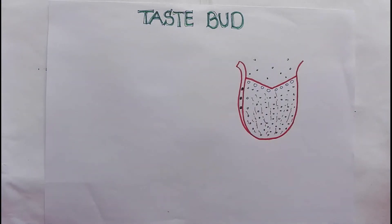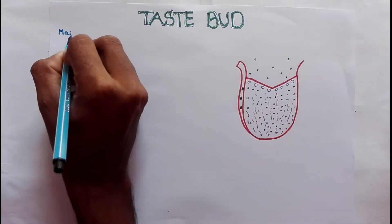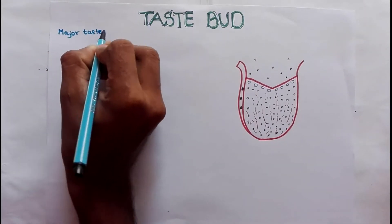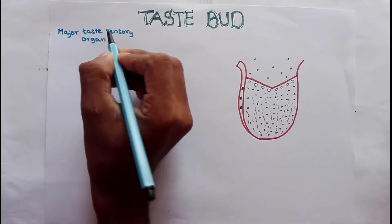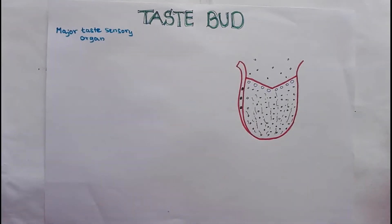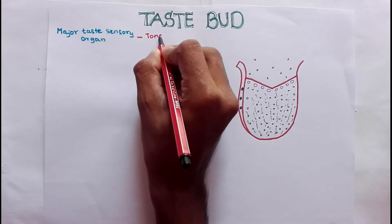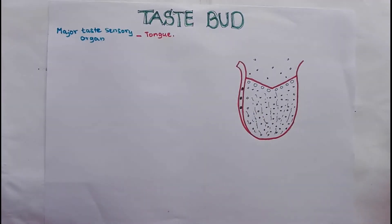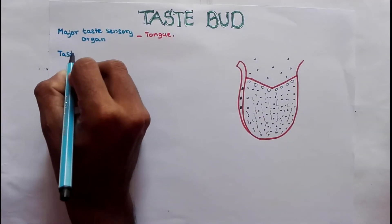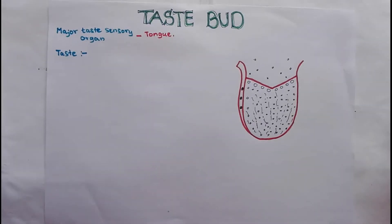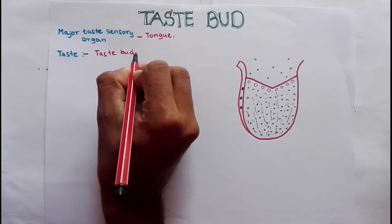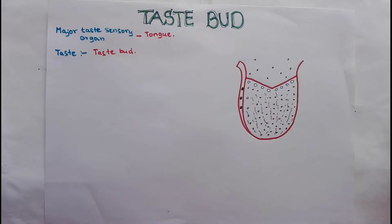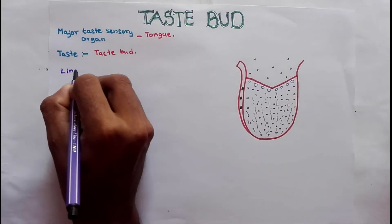In this video I'm going to talk about the structure of a taste bud. Our major taste sensory organ is the tongue, and the sensory receptors in the tongue are called taste buds. These taste buds are located inside structures called lingual papillae.